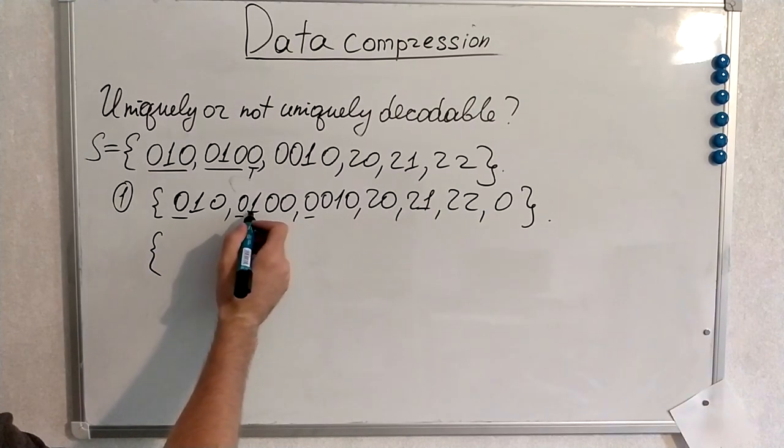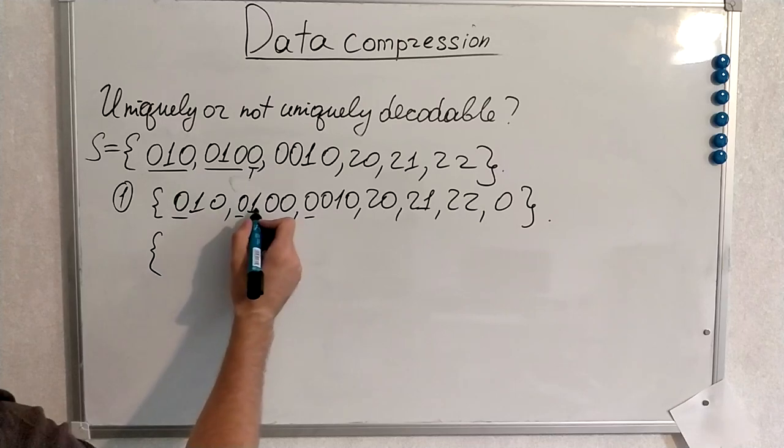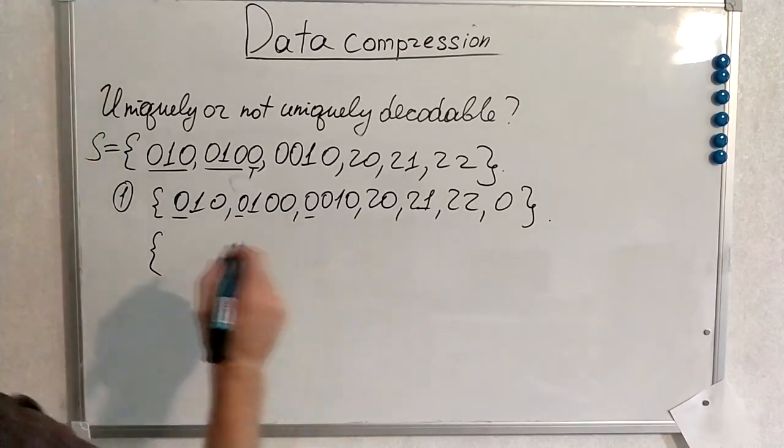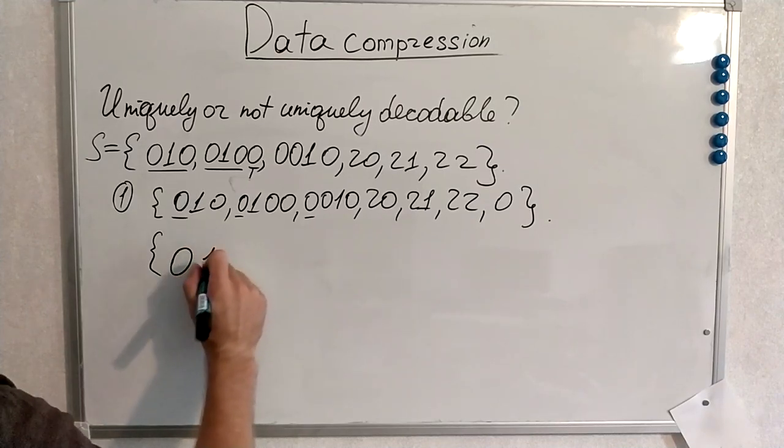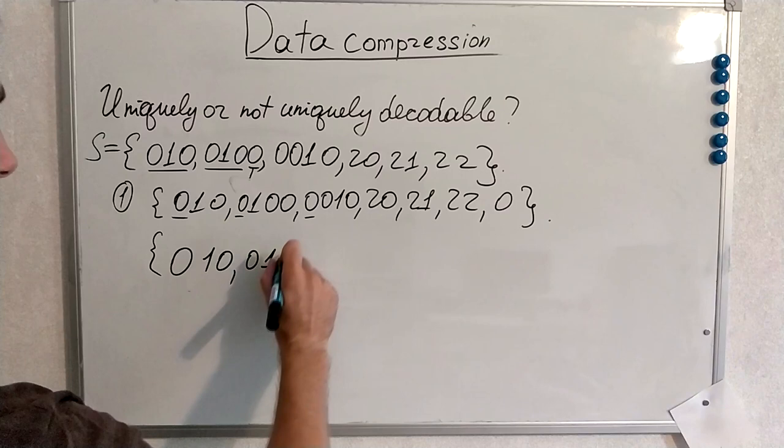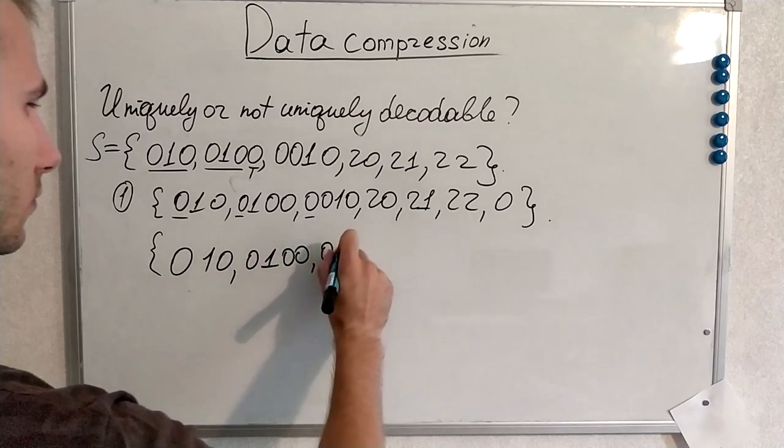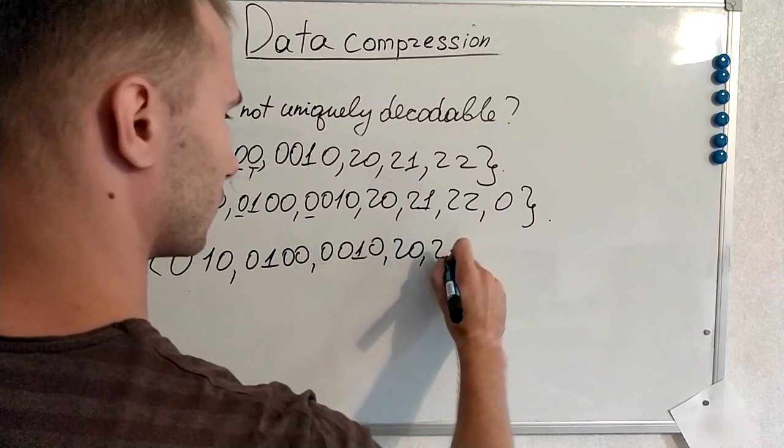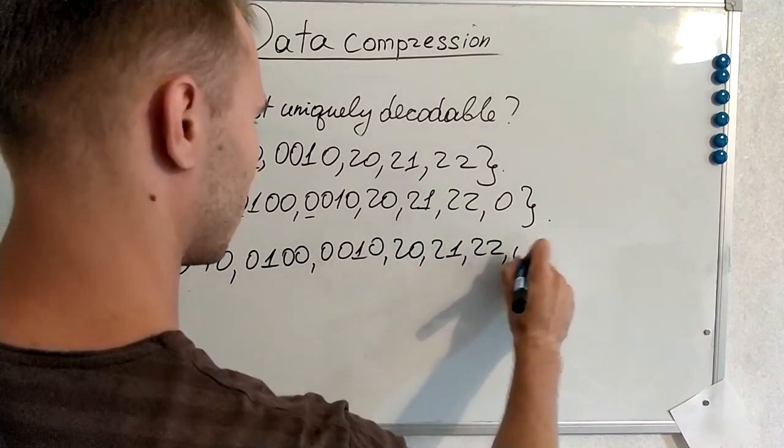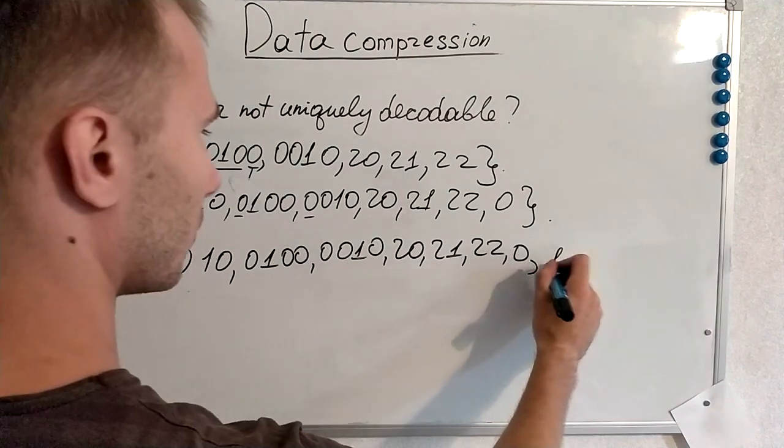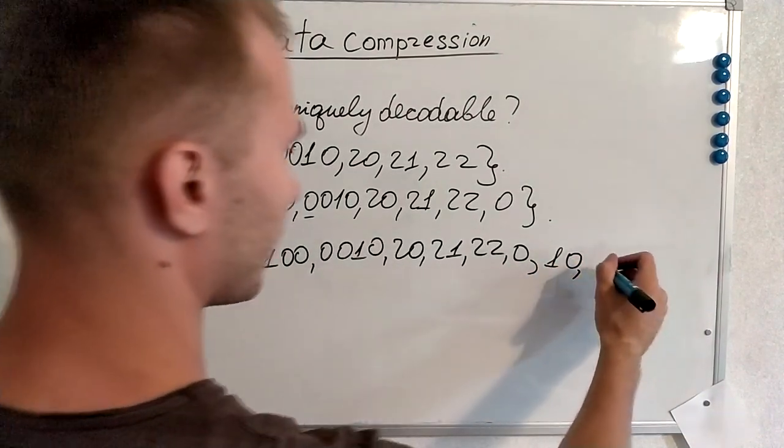0, 1, 1, 0, 1, 0, 0, 0, 1, 0. Let's write all of them down. 1, 0, okay, sequence is very big now.